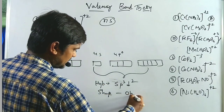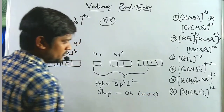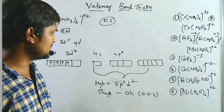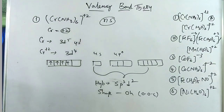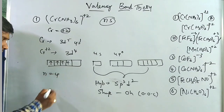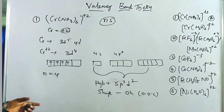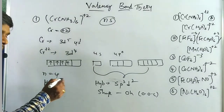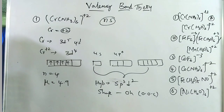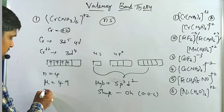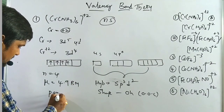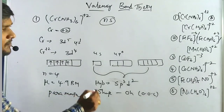The shape is octahedral, which belongs to outer orbital complexes. According to magnetic moment experimental conditions, the species is paramagnetic. The number of unpaired electrons is 4. Using the spin-only formula, the magnetic moment is 4.9 Bohr magnetons. It is a paramagnetic species.